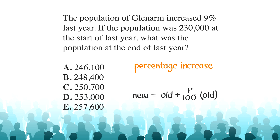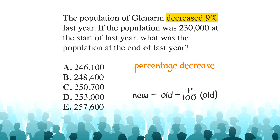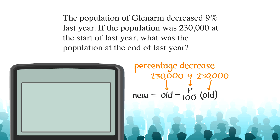The only difference between the formula for percentage increase and decrease is whether you're adding or subtracting. If the problem had said the population of Glenarm decreased 9% last year from 230,000, we would use the percentage decrease formula, substituting 230,000 for the old value and 9 for p. Entering 230,000 minus 9 over 100 times 230,000 into the calculator, the new decreased population would be 209,300.